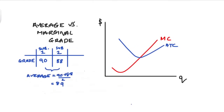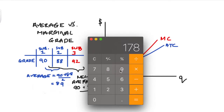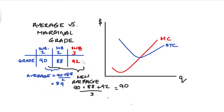The opposite is also true. Going back to our grades example, let's imagine that our marginal grade was higher than the initial average of 89. Let's say our next grade was 92. Our new average is now 90 plus 88 plus 92 all divided by 3, which equals 90 — higher than our previous average.